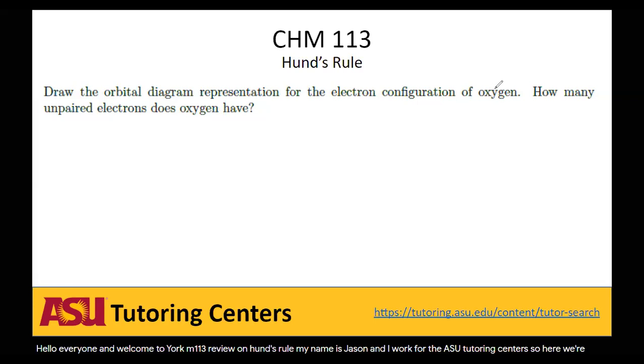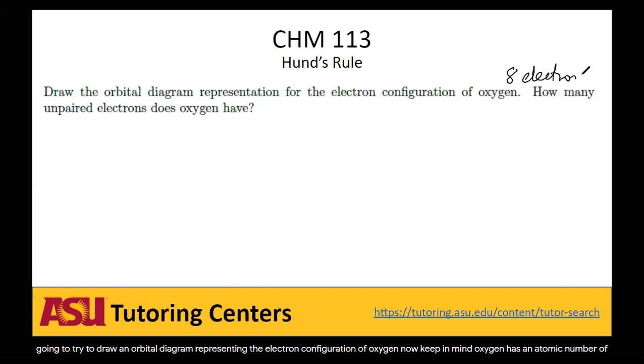Oxygen has an atomic number of eight on the periodic table, so that means it has eight protons and therefore also eight electrons.